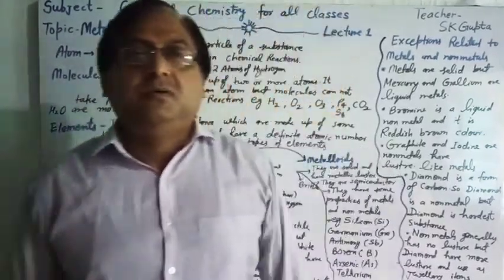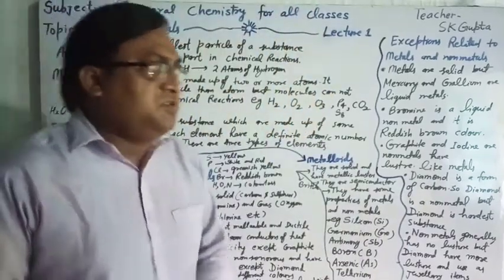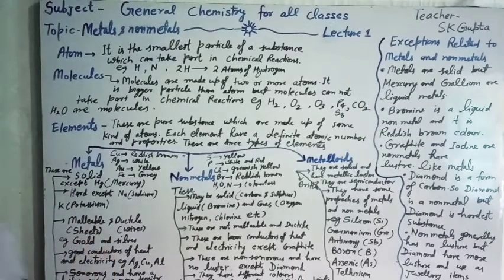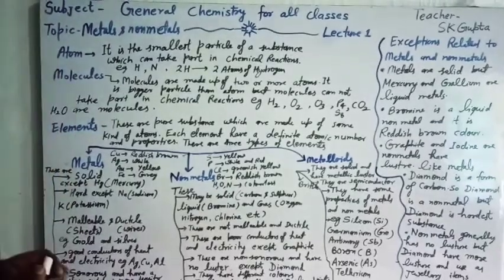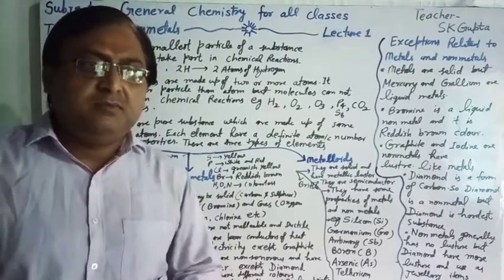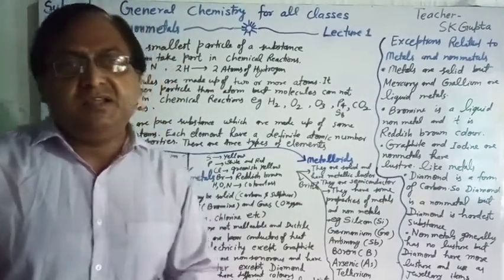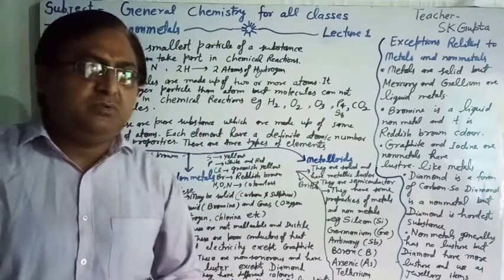Good morning students. Today I will teach you general chemistry for class 8, but this topic is useful for all classes — metals and non-metals. Atom is the smallest particle which can take part in a chemical reaction. A molecule is made up of two or more than two atoms, and it is a bigger particle than an atom. For example, H2 is a molecule and O2 is a molecule.